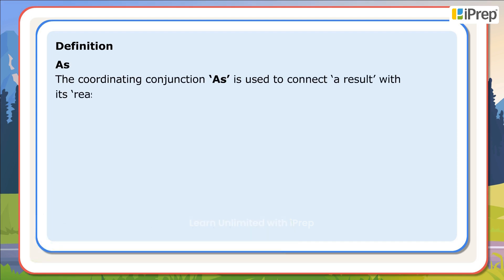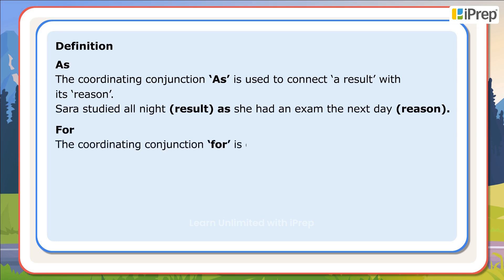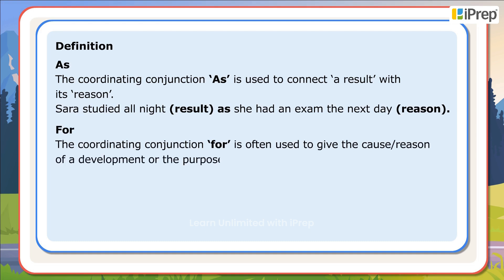The coordinating conjunction 'as' is used to connect a result with its reason. For example: Tara studied all night — that is the result — as she had an exam the next day — that is the reason.